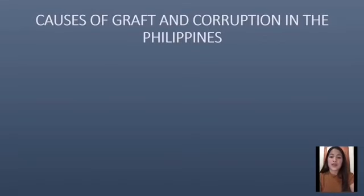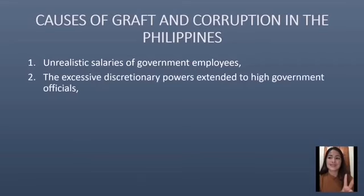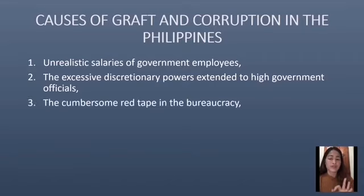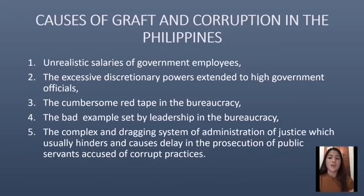The following are the causes of graft and corruption in the Philippines: number one, unrealistic salaries of government employees; number two, the excessive discretionary powers extended to high government officials; number three, the cumbersome red tape in the bureaucracy; number four, the bad example set by leadership in the bureaucracy; number five, the complex and slow system of administration of justice, which usually hinders and causes delay in the prosecution of public servants accused of corrupt practices.